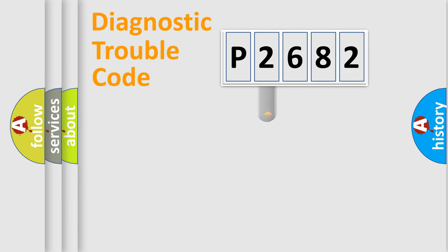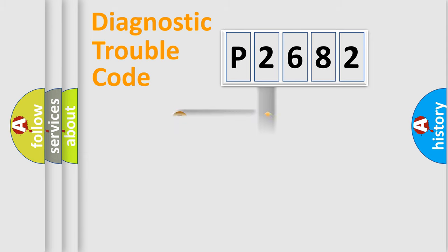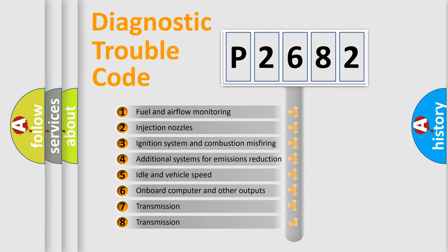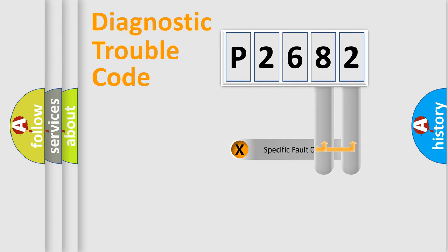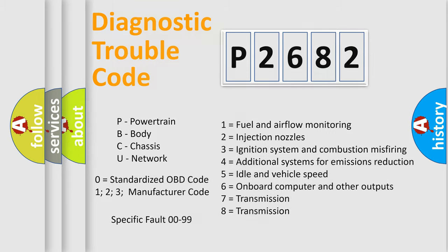This distribution is defined in the first character of the code. If the second character is expressed as zero, it is a standardized error. In the case of numbers 1, 2, or 3, it is a more specific manufacturer-defined error. The third character specifies a subset of errors. The distribution shown is valid only for the standardized DTC code, and only the last two characters define the specific fault of the group.